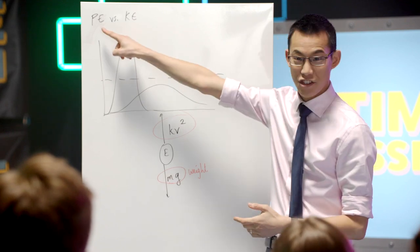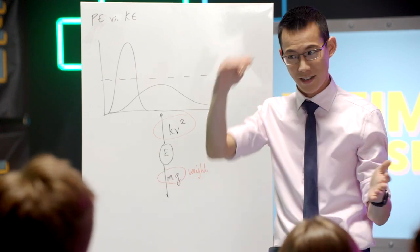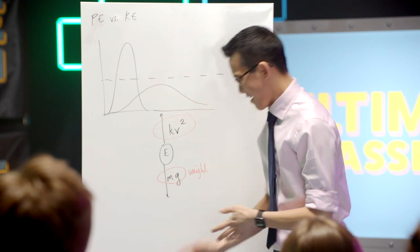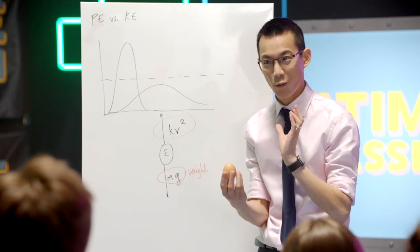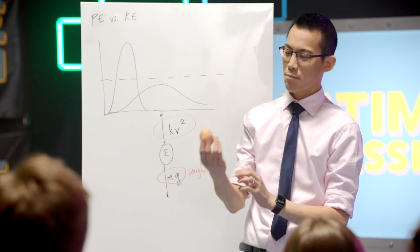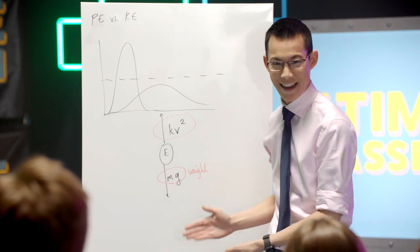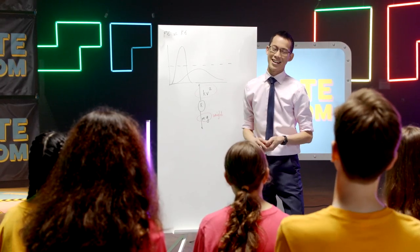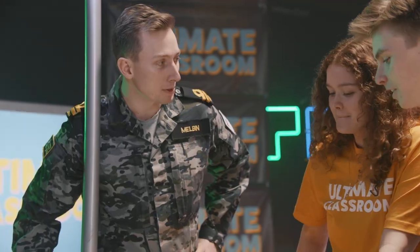In this egg drop challenge, a successful design will transfer potential energy to kinetic energy over the longest duration. So we want to maximize the time of descent, and we also want to minimize the impact force. This is actually a perfect example of where mathematical reasoning is really important, because when you've got precious cargo, you don't just want to experiment and test and just see what happens. You actually need to use the mathematics and the equations to let you know what's going to happen before you actually do anything. So good luck. I can't wait to see what designs you come up with.